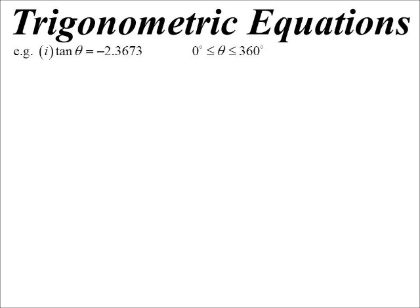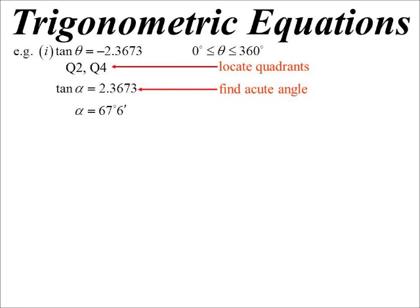So the process when solving a trig equation, first step is to work out, okay, where are we on our picture? And so, of course, tan is negative in the second and the fourth quadrant. We then have to work out what the acute angle, well, it's sort of a throwback, I guess, to when we use tables.